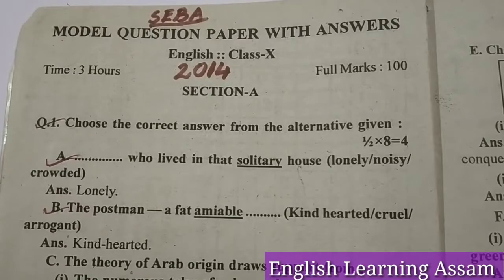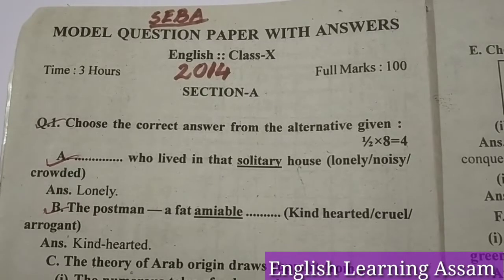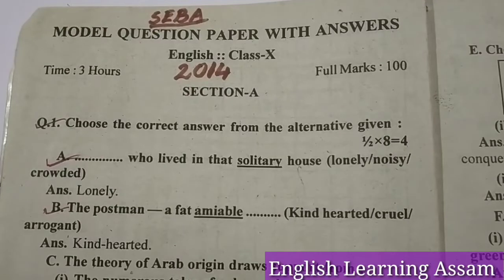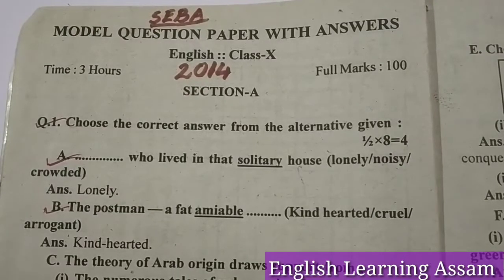Already I have discussed part 1 and part 2. In part 1 you have learned about the prose, poetry, and rapid reader, and in part 2 you have learned grammar.